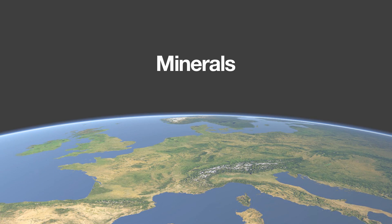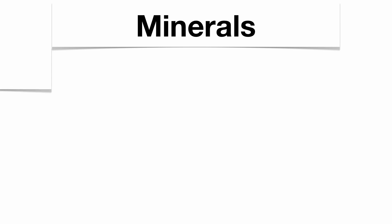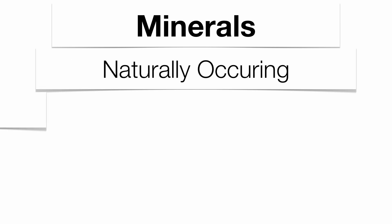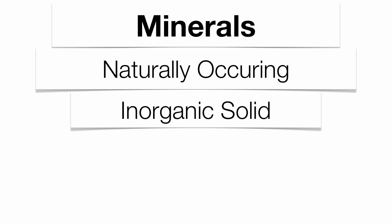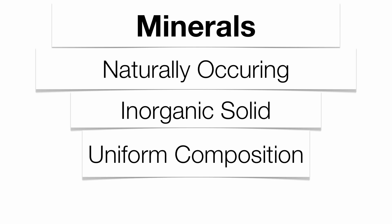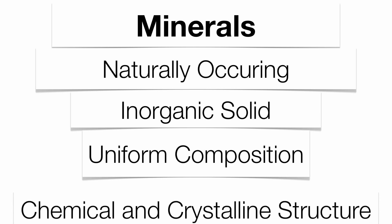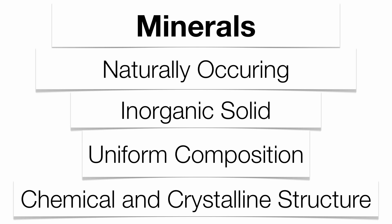In order to be classified a mineral, there are certain criteria that need to be met. Minerals need to be made in nature, made of something that was once non-living — that's what inorganic means — and it needs to be solid. So oil and gasoline could not be considered minerals. It needs to be made of the same stuff throughout your sample, have some sort of chemical structure from the periodic table of elements, and it needs to have some sort of crystalline structure as well.